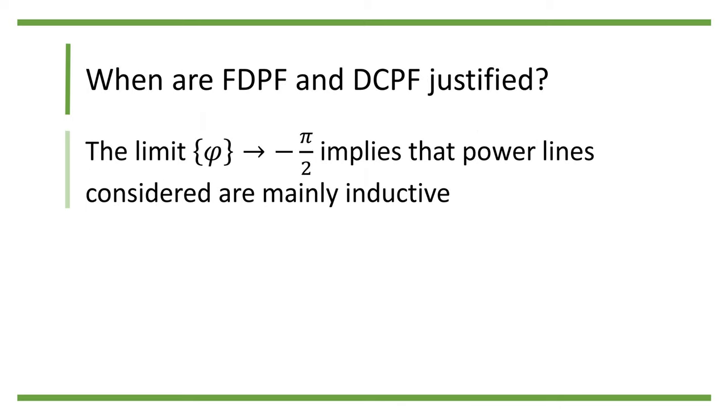So when are FDPF and DCPF justified? Firstly, the limit phi approaches minus pi over 2 implies that power lines considered are mainly inductive and the resistance value is very small.